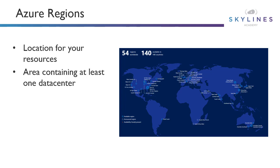A region is an area containing at least one data center. You'll hear about availability zones — sometimes the region contains two data centers, close enough from a latency perspective, but far enough apart in the event of a disaster or something going wrong with that data center. We'll talk more about availability zones a bit later on.